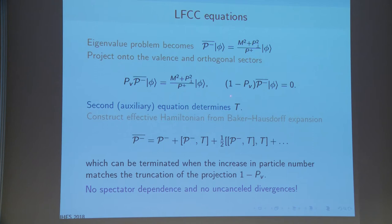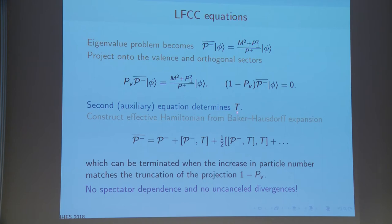For example, if the valence state is one particle for φ⁴ theory, and we keep an infinite number of terms considering only the odd sector, it would be 3, 5, 7, and so on. But because we truncate as many as we need — for example, if we have 5 functions in the T operator, we truncate to 3, 5, 7, 9, 11 — we will do just one equation. The effective Hamiltonian can be calculated from the Baker-Hausdorff expansion, and we terminate when the increase in particle number matches the truncation of the projection.